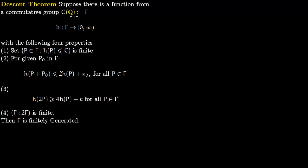We want to prove the descent theorem. Suppose there is a height function on our points. We write C(Q) for all the rational points on the curve, which form a group under the addition law, denoted by γ. On these rational points we put a height function: for a point P on the curve we assign H(P).